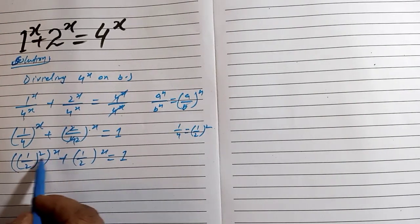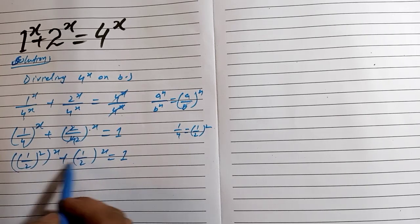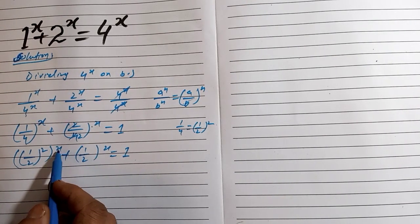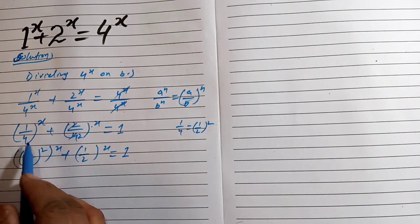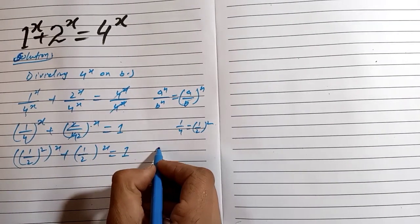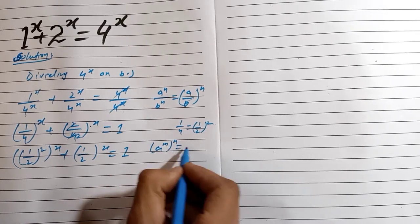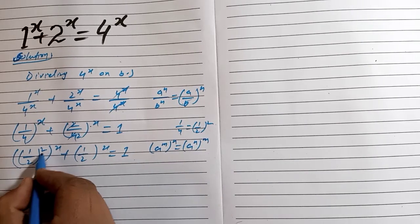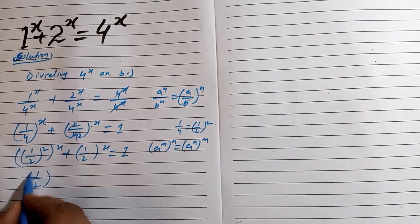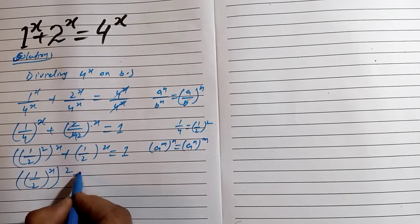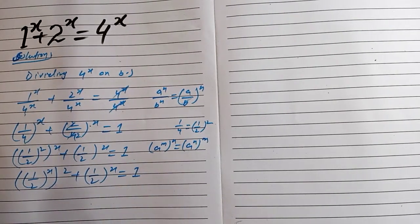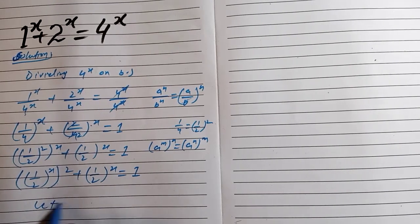To make these two powers the same, we let this term equal another variable. We write (1/2)^(2x) as [(1/2)^x]^2, using the rule a^(mn) = (a^n)^m. So we have [(1/2)^x]^2 plus (1/2)^x equals 1.